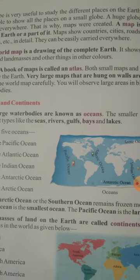The world map is a drawing of the complete earth. It shows water bodies in blue and land masses in other colours. Prithvi ka ek sampurna chitra ko world map kehte hain. World map mein water body dikhai deti hai blue colour mein, aur land masses aur doosri cheezein alag colours mein.